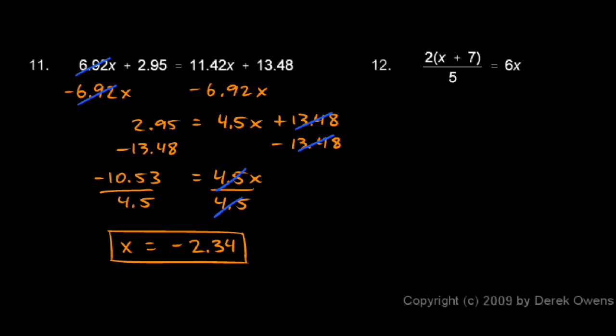And number 12: 2 times (x + 7) over 5 equals 6x. I'm trying to isolate x, so here's what I'm going to do. I'm going to get rid of the 5, and then I'm going to get rid of the 7, and then I will get rid of the 2.